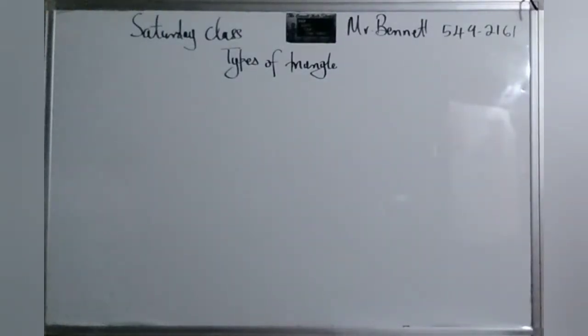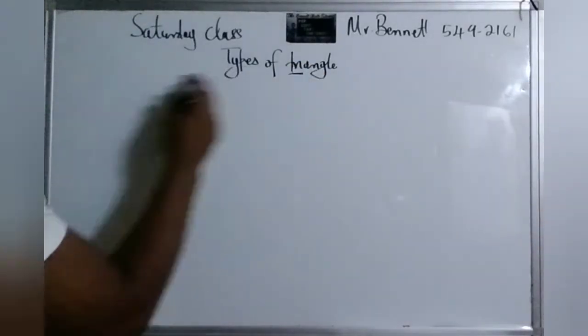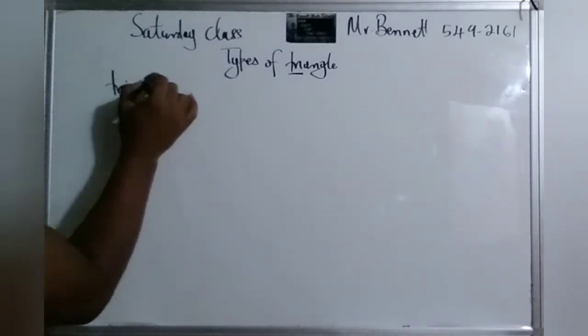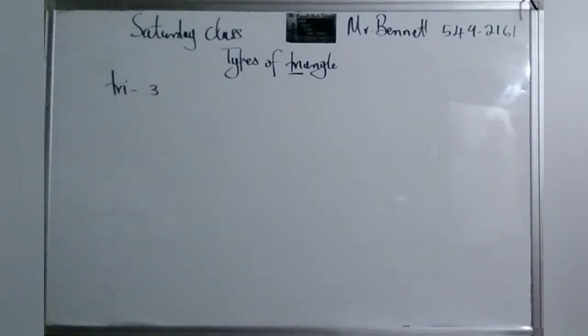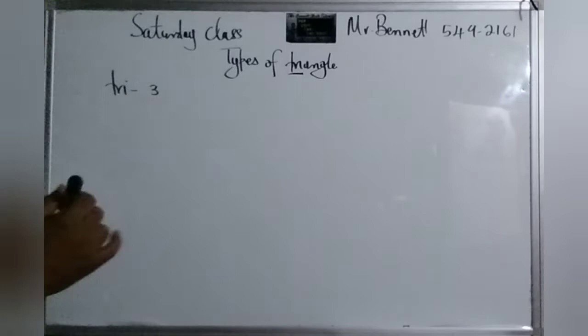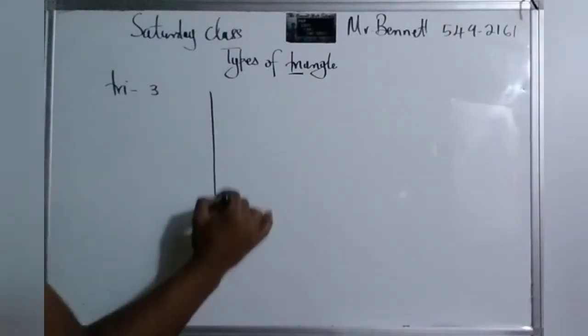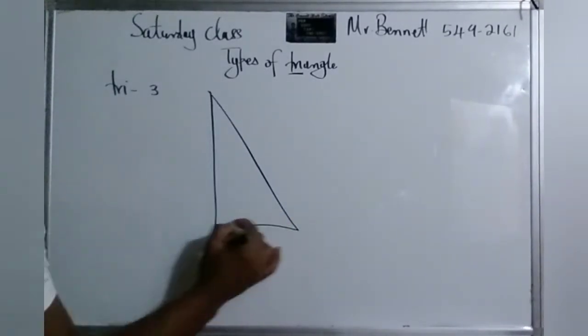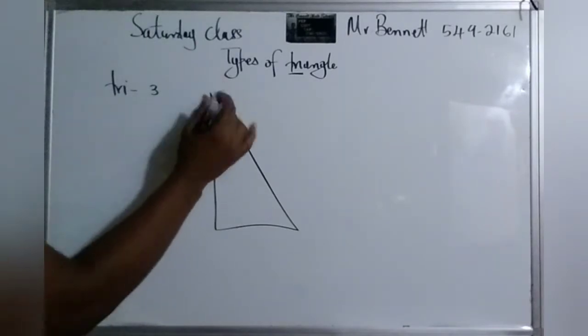All right, so today we are going to look at types of triangles, but before we look at types of triangles, I will just look at what is a triangle. A triangle, basically tri, this means a tree. So basically it has three sides.